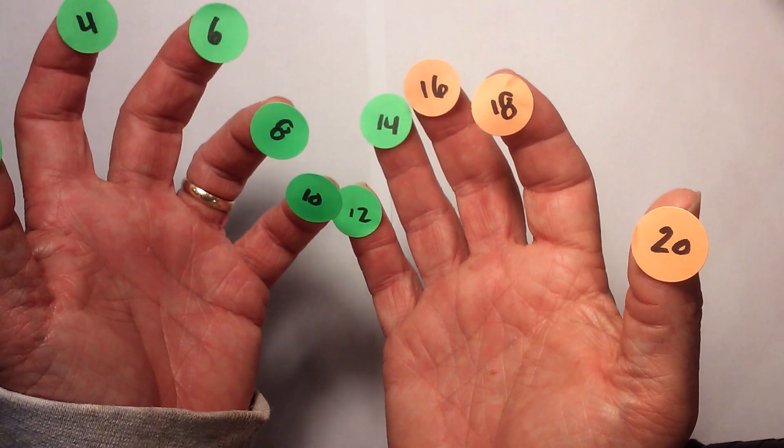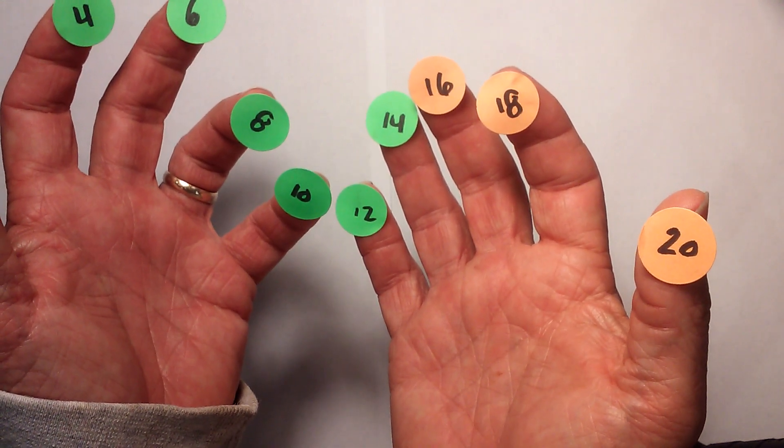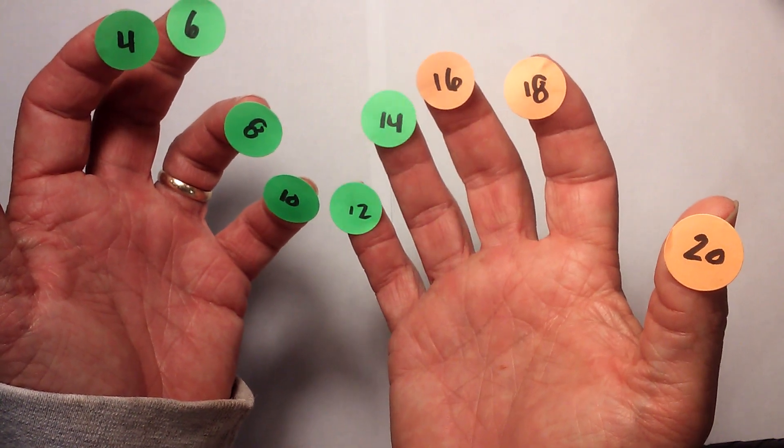So it's 2, 4, 6, 8, 10—remember it's an even number so it will end in 0—and then 12, 14, 16, 18, and 20. So there's your 2s.